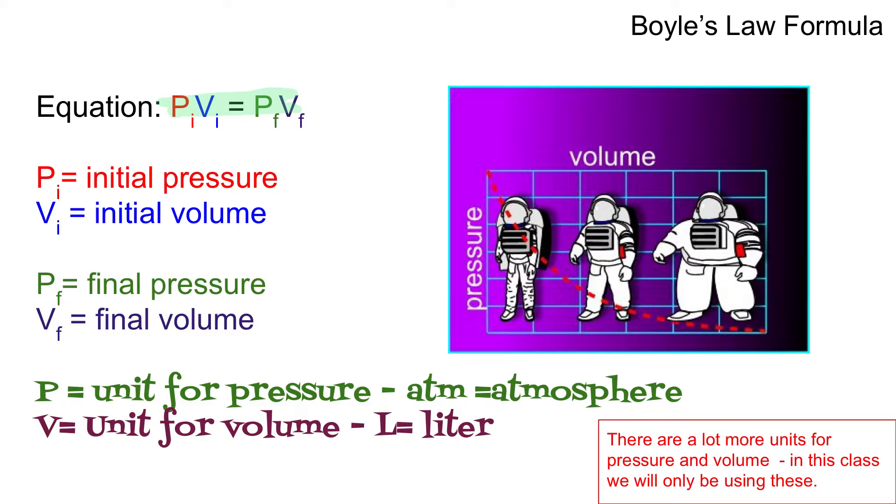P initial is your initial pressure, the pressure that you start with. V initial is your initial volume. P final is your final pressure and V final is your final volume.